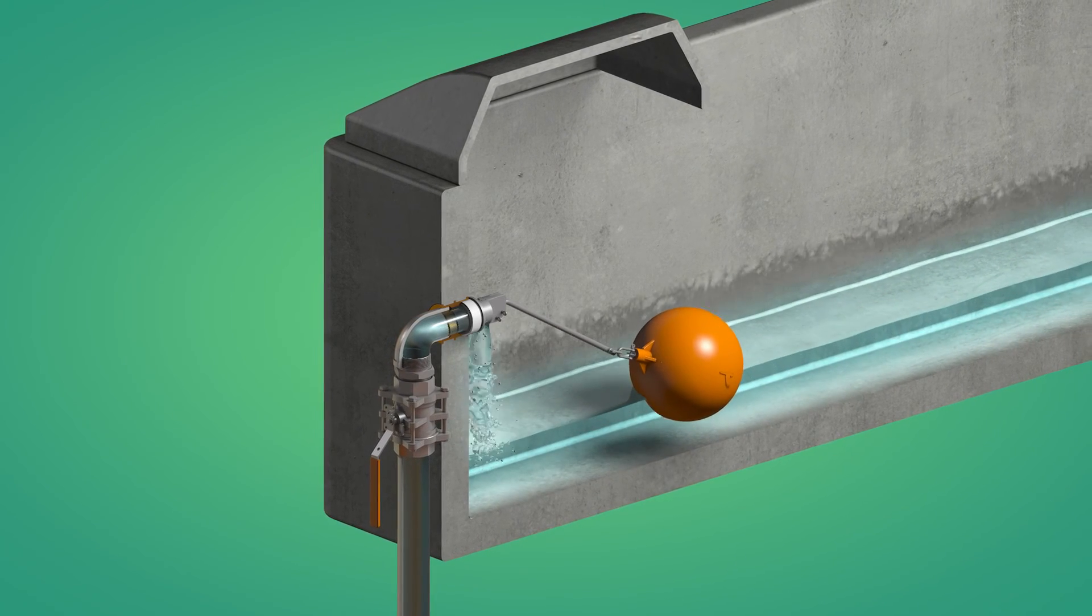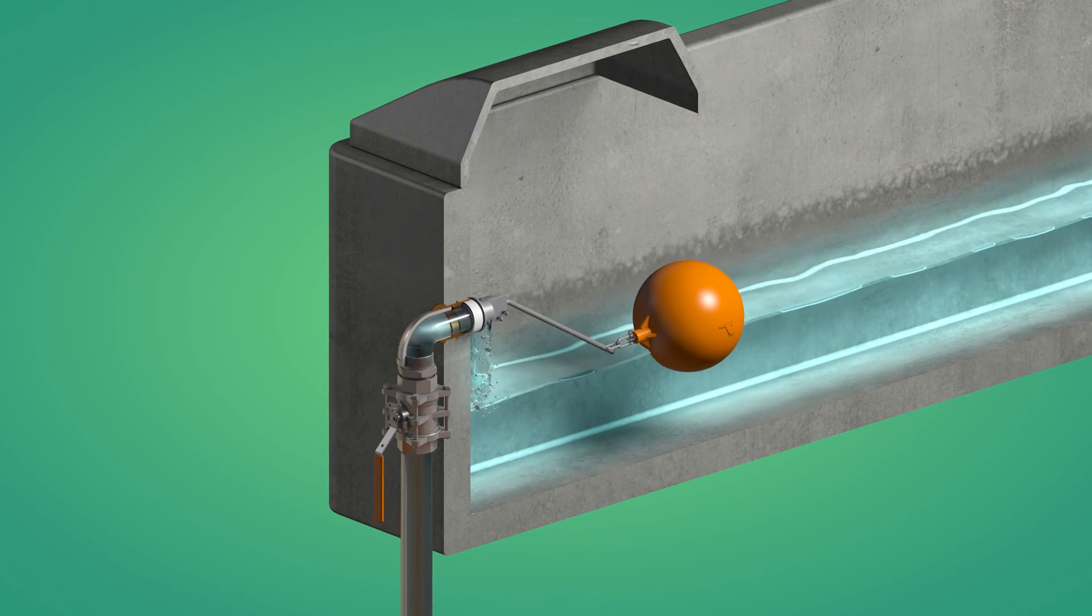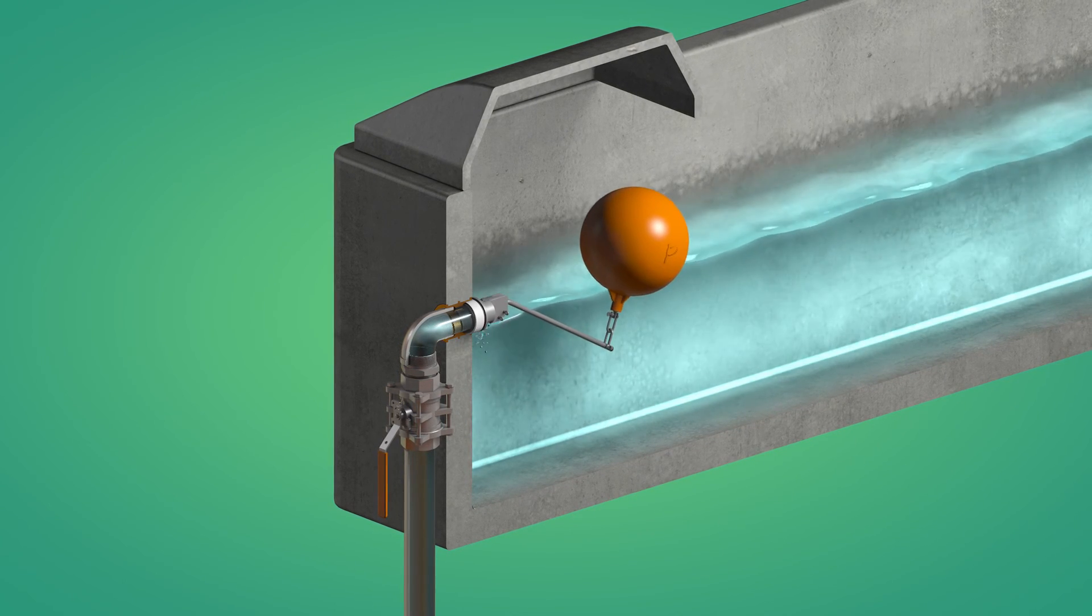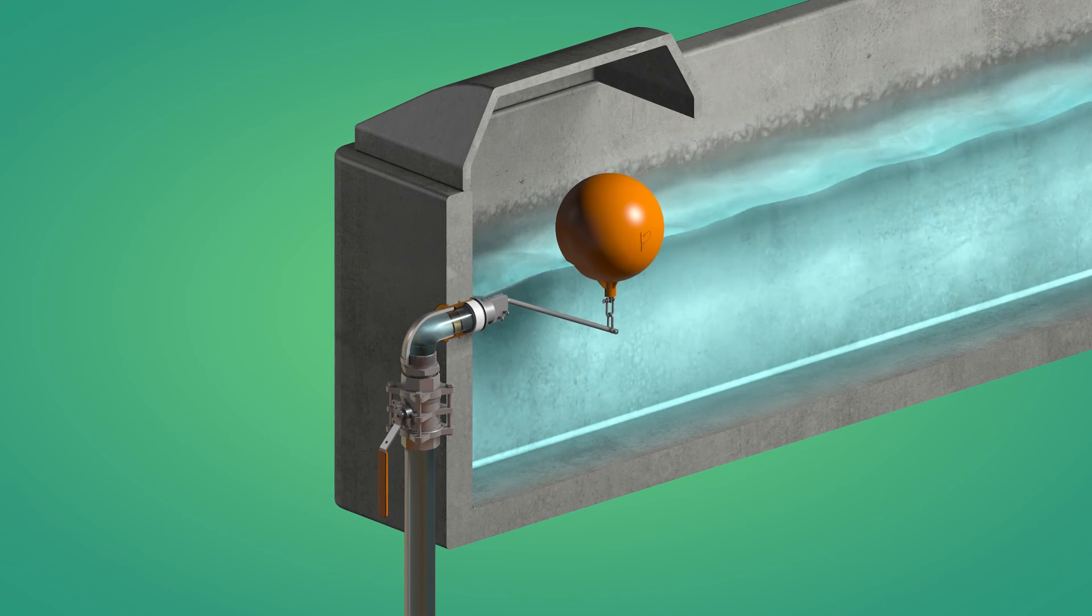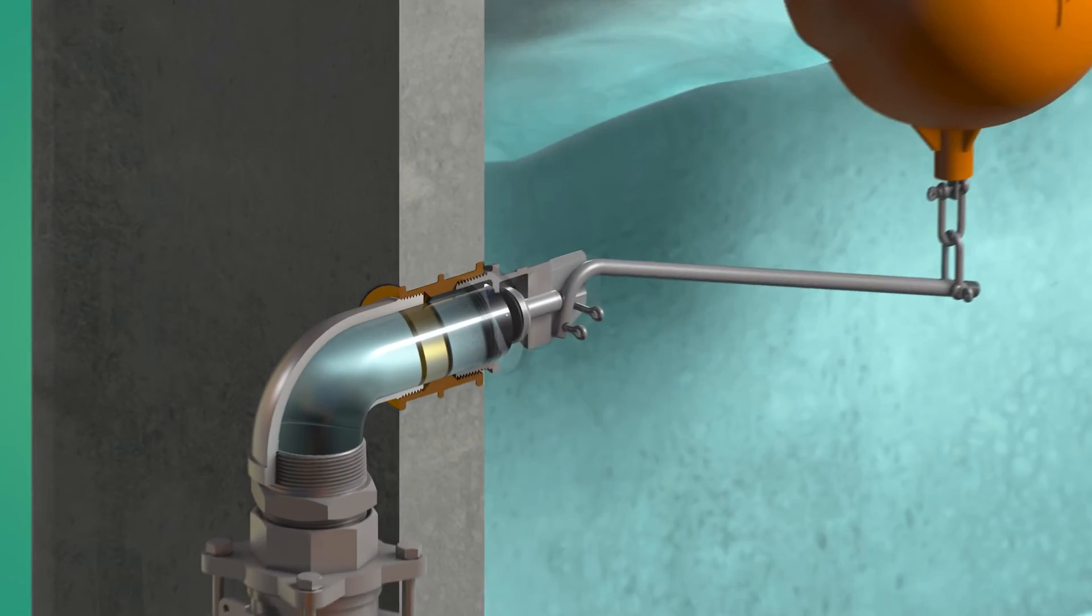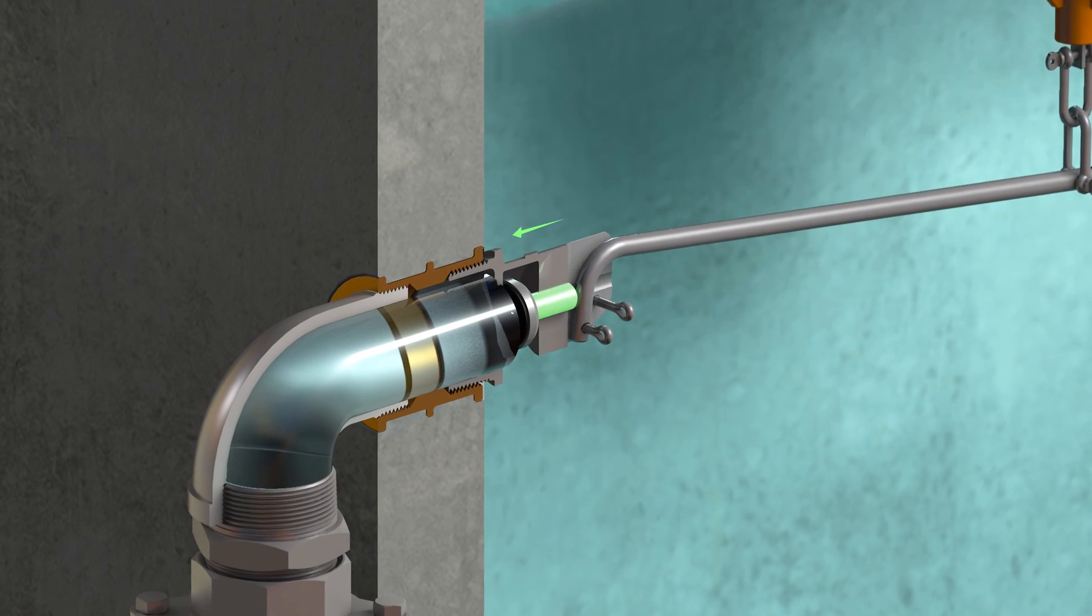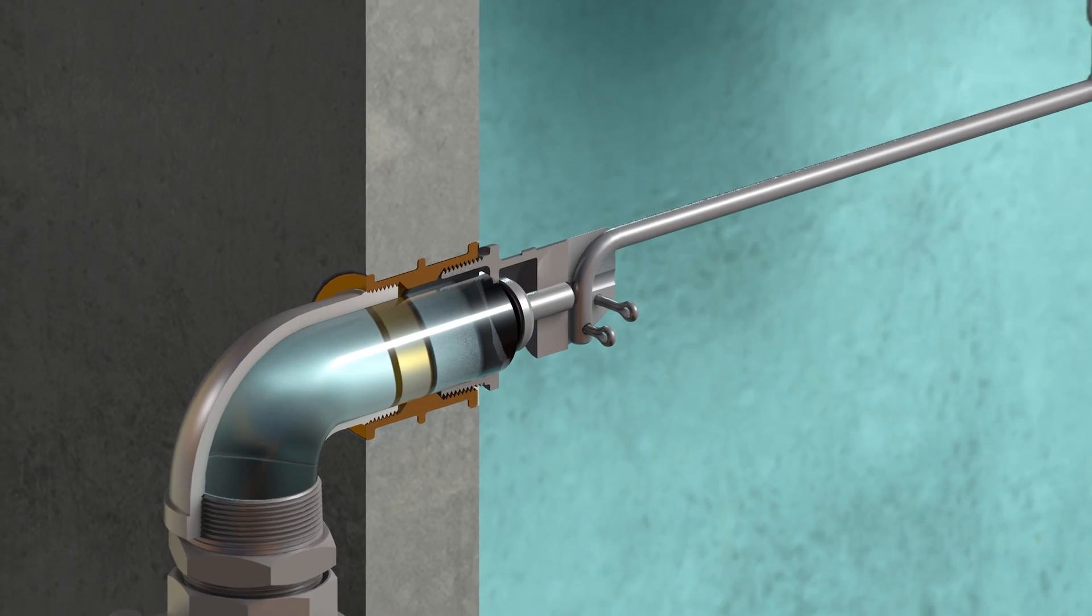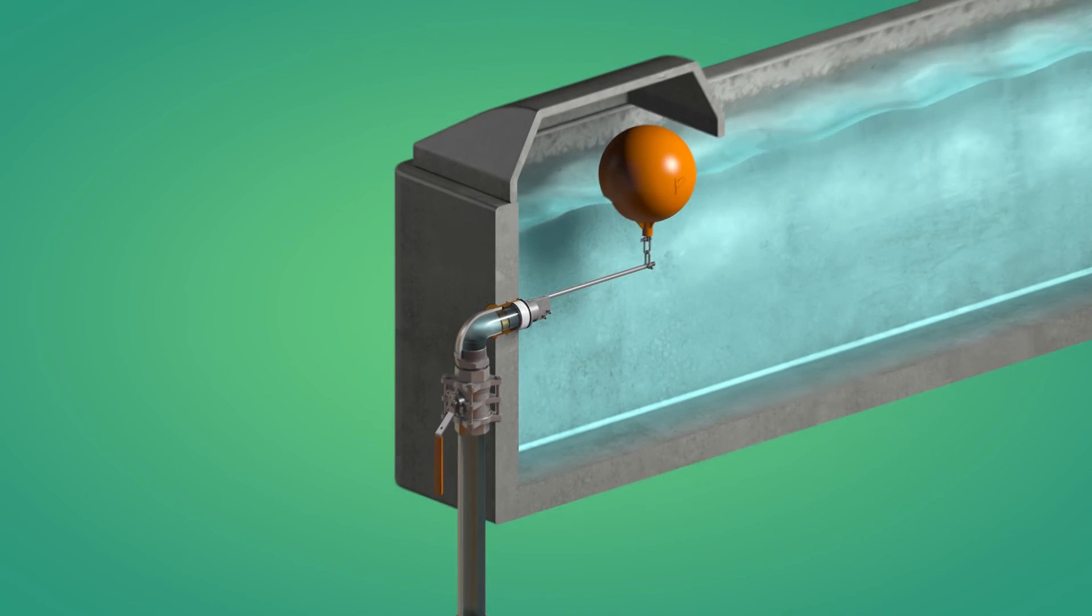Which in turn causes the float to rise. The float, being attached to the pivoting float arm, forces the float arm to lift, and as it pivots on the split pin it exerts pressure on the push rod, which in turn forces the washer seat assembly to seal.